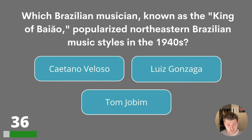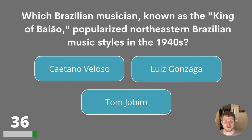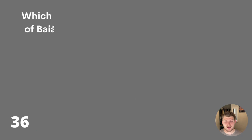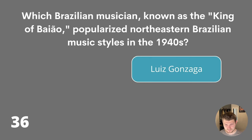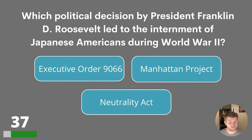Question thirty-six. Which Brazilian musician known as the King of Baião popularised Northeastern Brazilian music styles in the 1940s? Caetano Veloso, Luís Gonzaga or Tom Jobim? The answer is Luís Gonzaga. Apologies for any mispronunciation on that question.